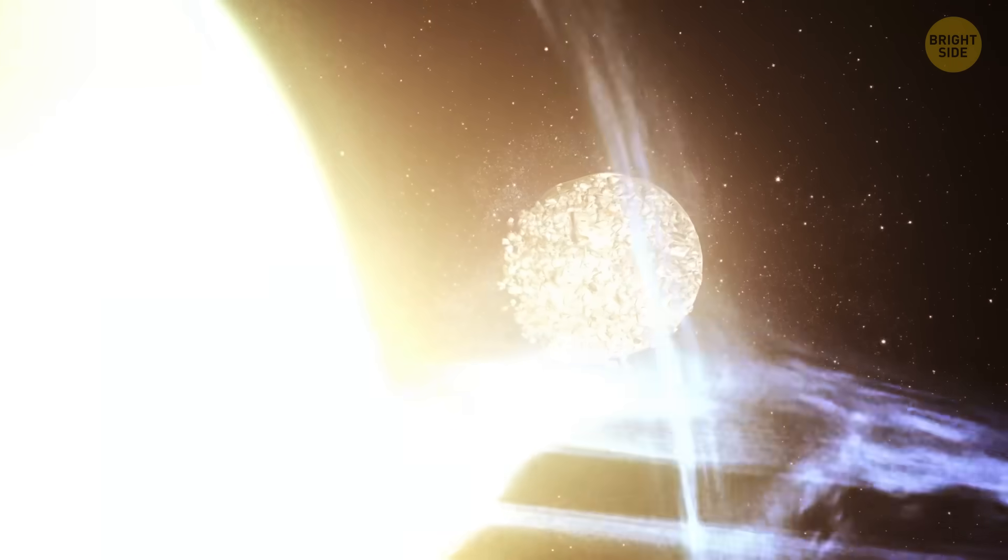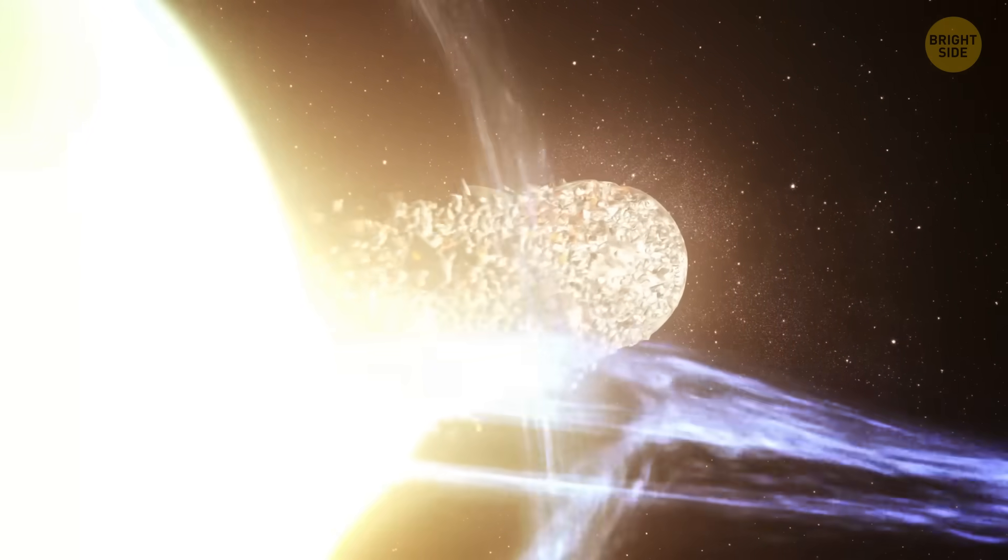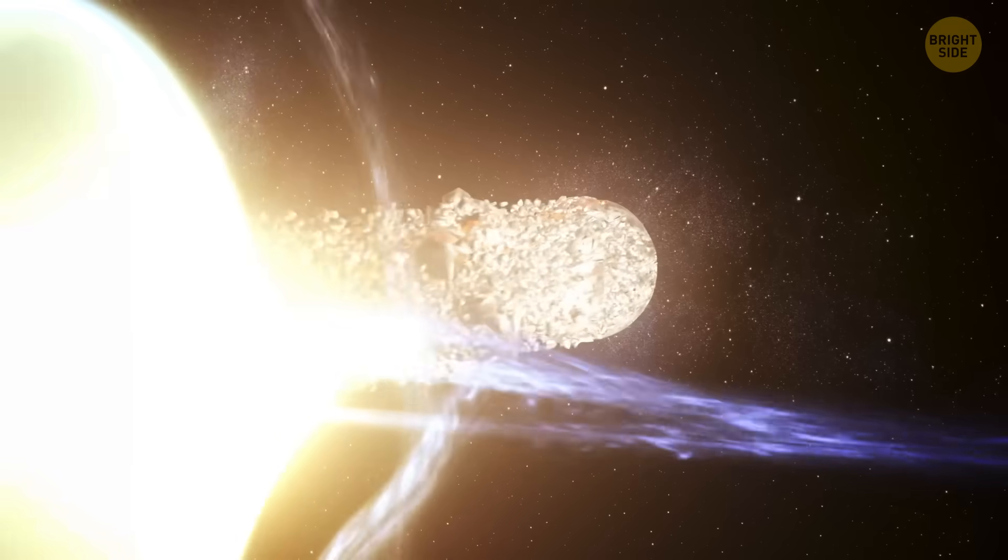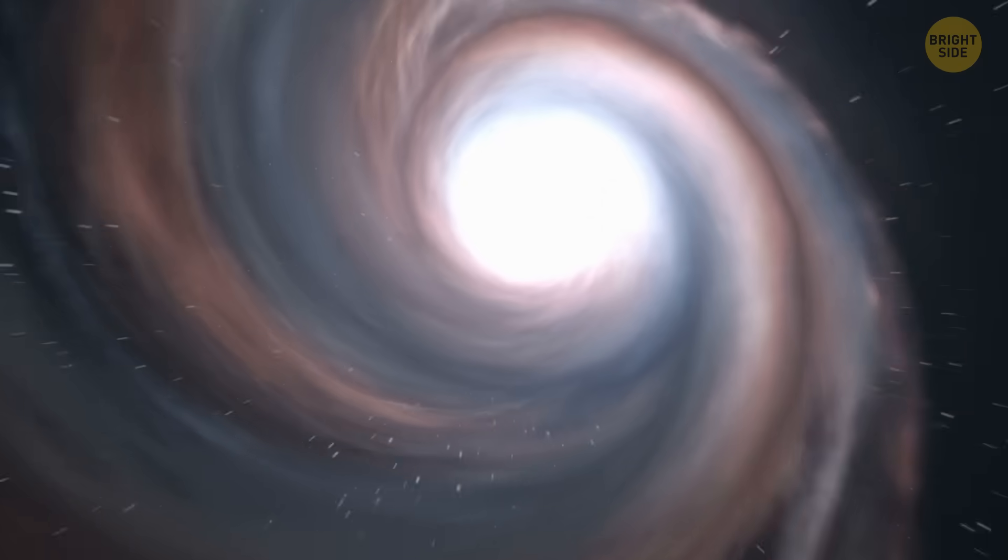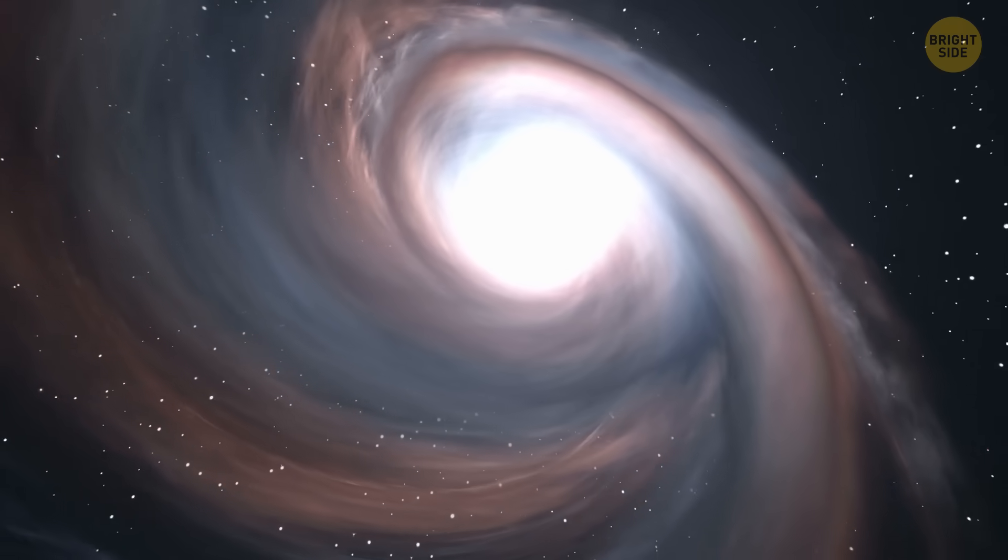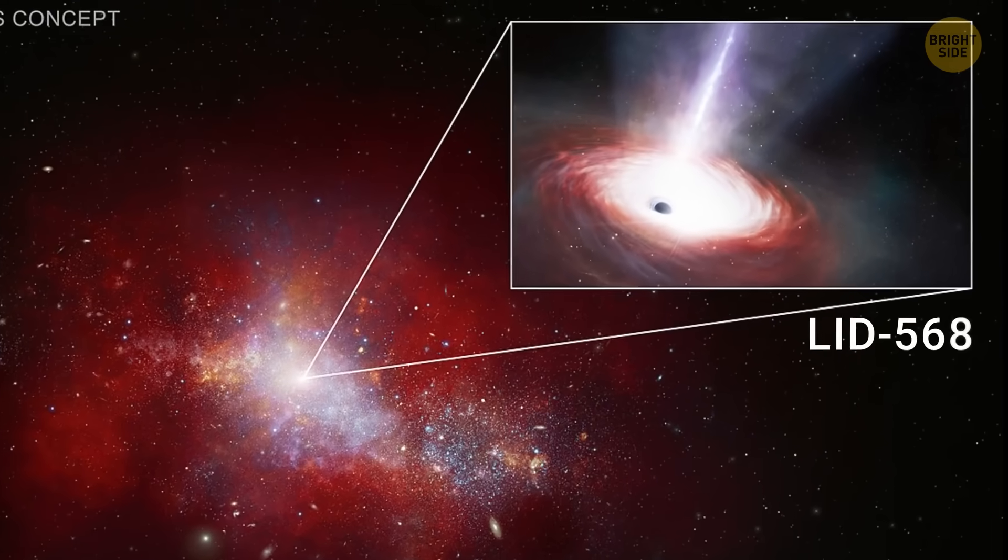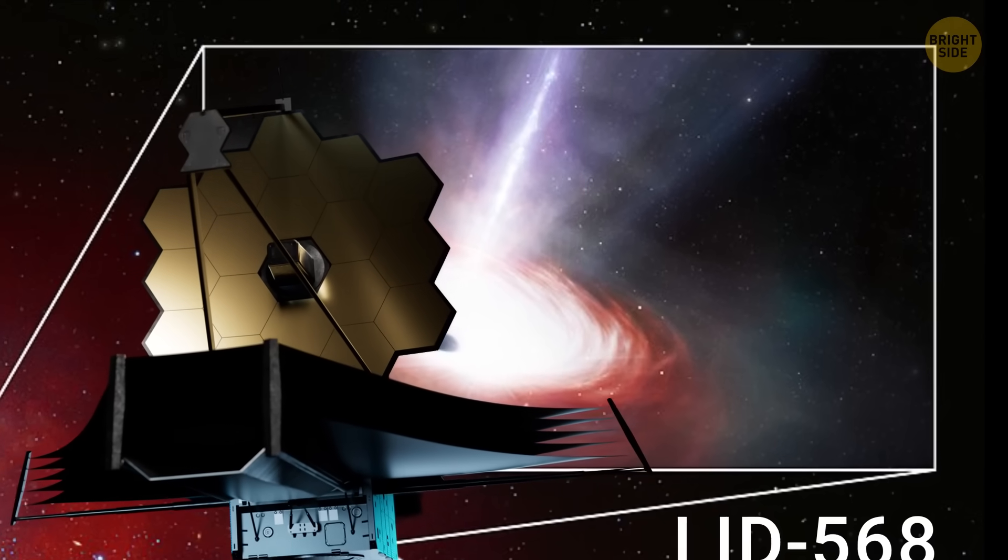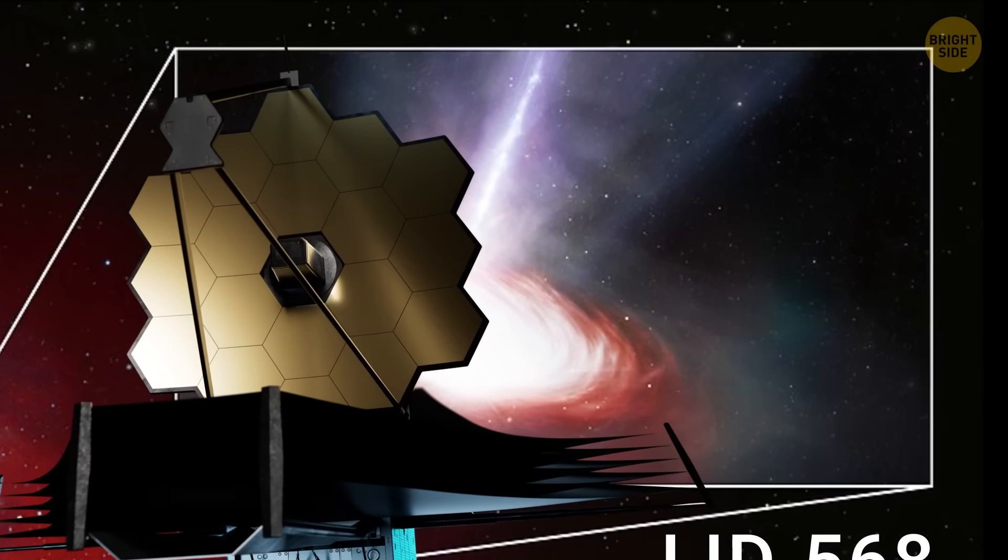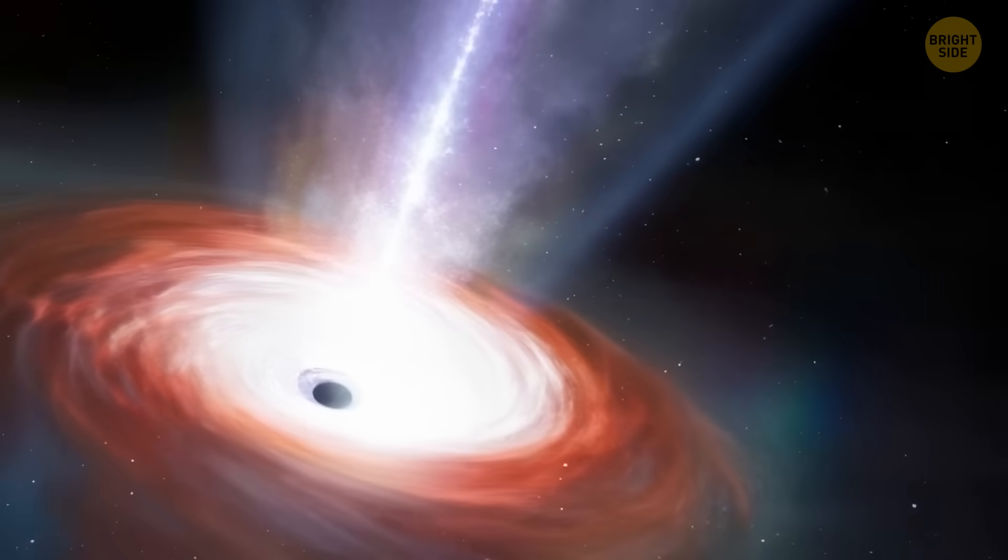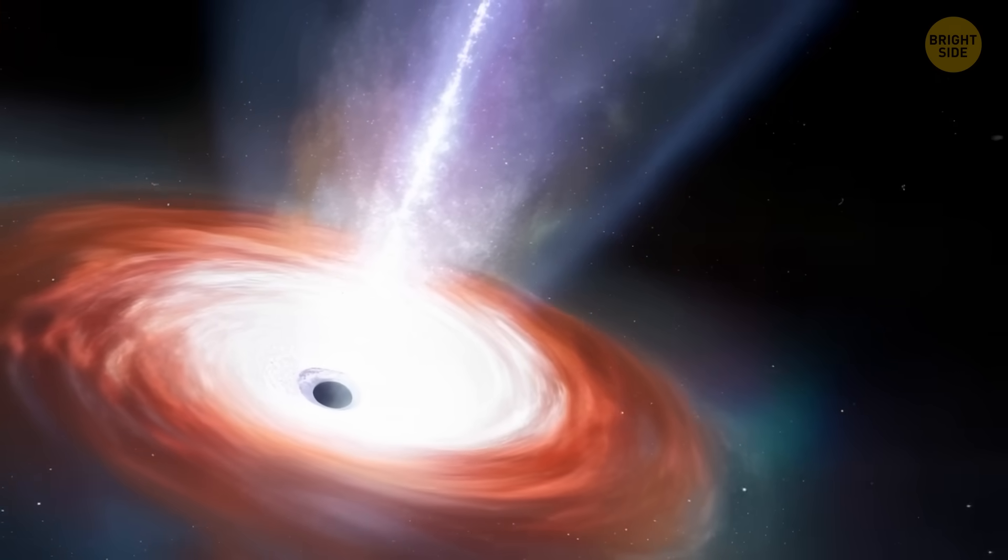The thing is, astronomers thought they had found a super-hungry black hole that was eating stuff 40 times faster than it should. And that was something that didn't make sense with the existing laws of physics. That black hole, called LID 568, was spotted with the help of the James Webb Space Telescope. It was from the early days of the universe, having formed just 1.5 billion years after the Big Bang.